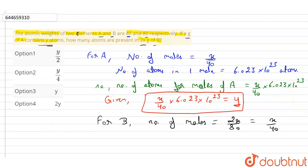So now, the number of atoms in 2x grams of B is equals to...